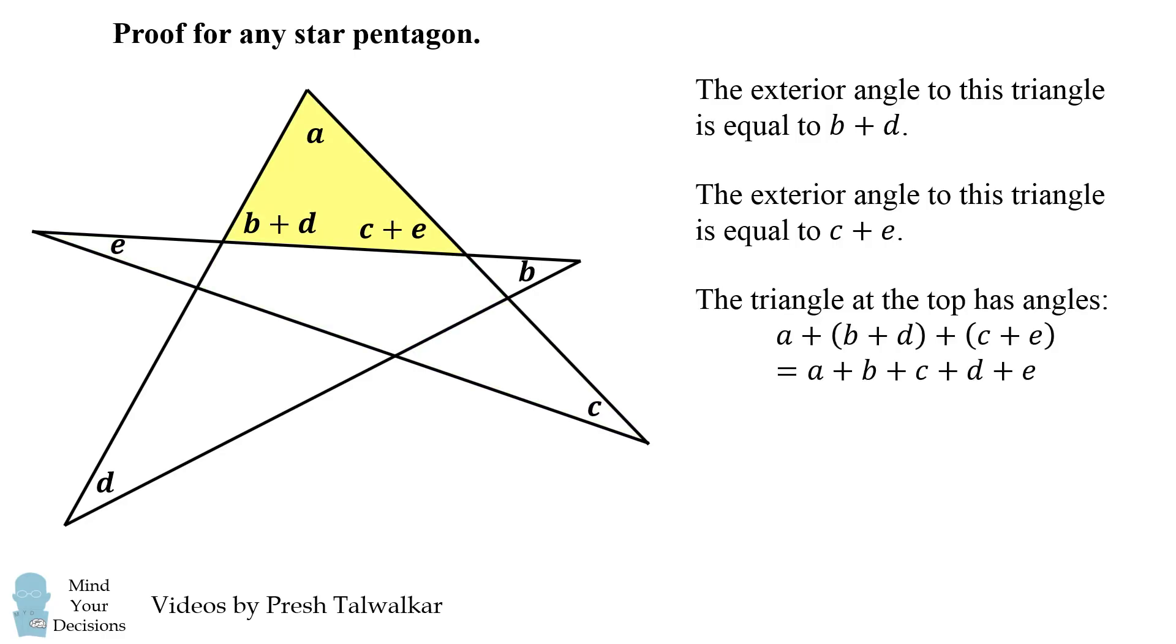So now take a look at this top triangle. It has angles A, B plus D, and C plus E. So this will be equal to A plus B plus C plus D plus E because it has one copy of each letter. Finally, since the sum of angles in a triangle is equal to 180 degrees, we're done. The sum of the angles in this is A plus B plus C plus D plus E and it's equal to 180 degrees. Amazing.